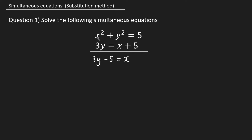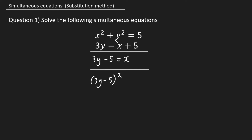Your second step is to take the non-linear equation and rewrite it with x replaced by 3y − 5. So my first term is x squared, and instead of writing x I'm going to write 3y − 5 because it is equal to x. That gives us (3y − 5)² + y² = 5. That's the second step.